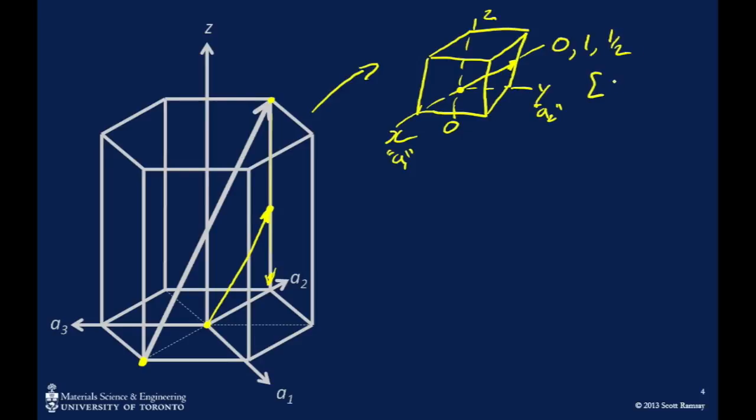So that would mean that this vector is the, we're going to multiply by 2, 0, 2, 1 vector. So that's U prime, V prime, and W prime.